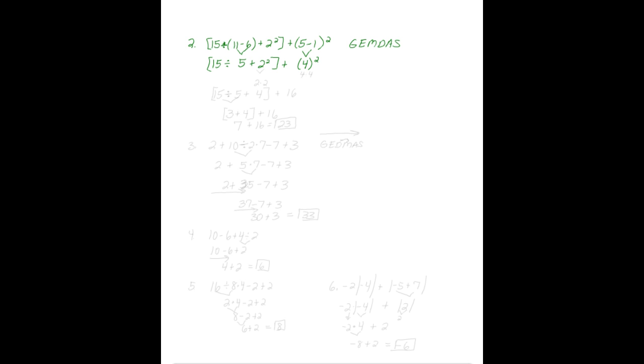Let's work on this grouping. Exponents come before division, so we need to do our exponents first. 2 times 2 is 4. So now we have 15 divided by 5 plus 4 in brackets, plus, let's expand this one out, 4 times 4 is 16.